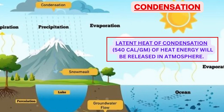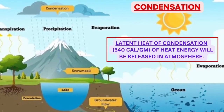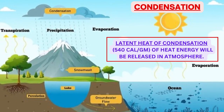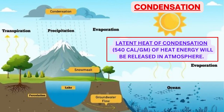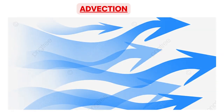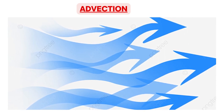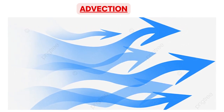Next is condensation. As air is lifted, it will be cooled due to the lapse rate of the atmosphere. When the temperature reduces, the capability of air to hold water vapor also reduces. Below a certain temperature, excess water vapor will condense into liquid water. In this process, the latent heat of condensation — that is 540 calories per gram — will be released into the atmosphere. The last method of heating is advection, which is the transfer of heat through horizontal movement of air.